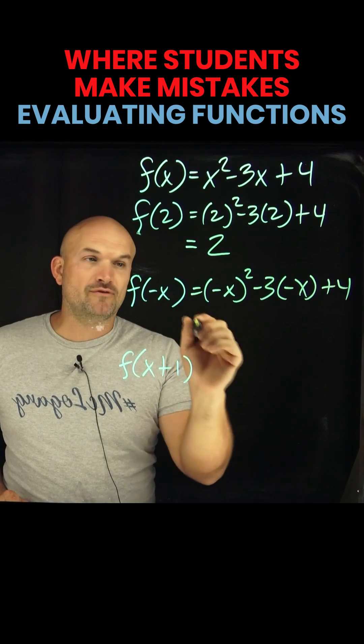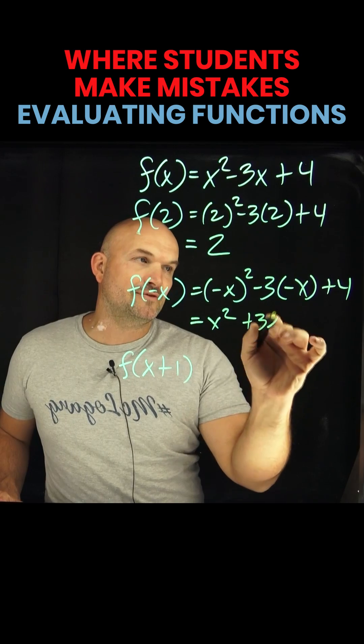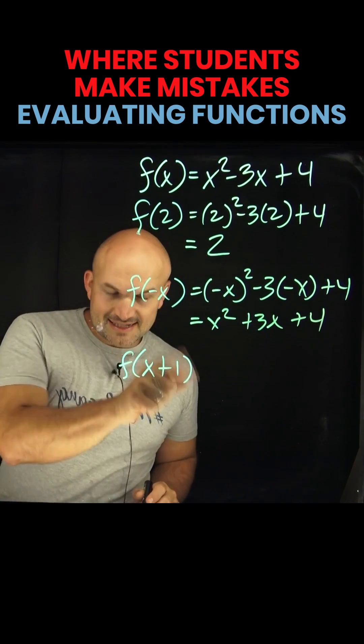because this is a negative x squared. So therefore, that's going to give you a positive x squared. Negative 3 times negative x is going to be a positive 3x plus 4. Now with this expression.